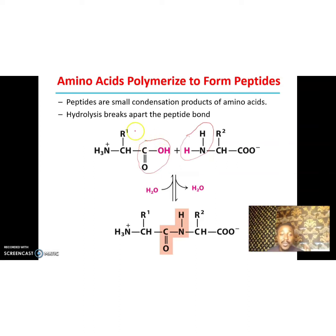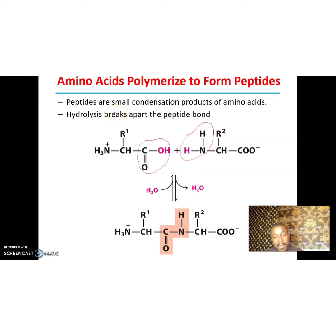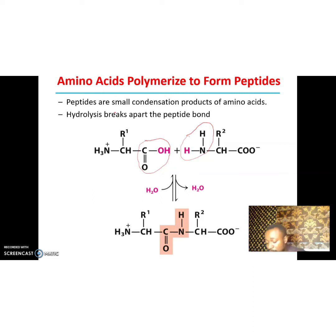Do not confuse this with side-chain carboxyl groups. For example, the gamma-carboxyl group of glutamate can form a bond, but the peptide bonds found in proteins are specifically formed between the alpha-carboxy group and the alpha-amino group. In this reaction, the OH and H are removed to give water.